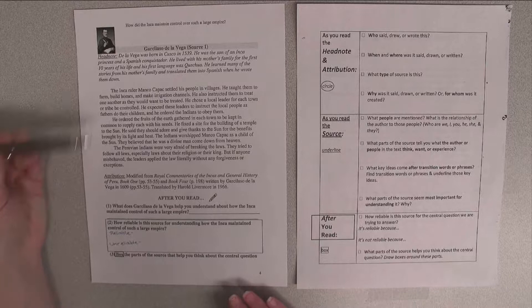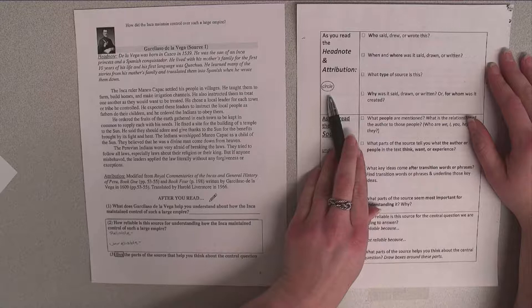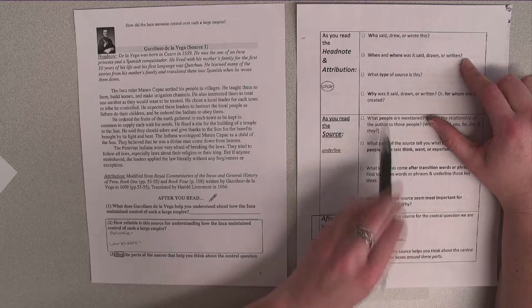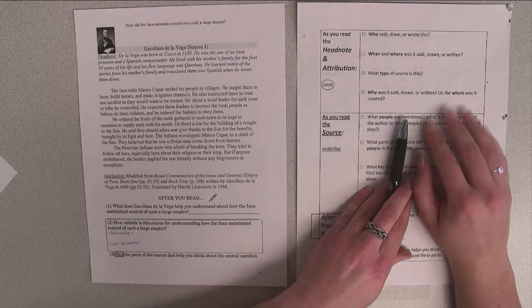So as we look at our source, the first thing we're going to do is look at our headnote and attribution and we're going to circle anything that tells us who said, drew, or wrote the source; when and where it was said, drawn, or written; what type of source it is; why was it said, drawn, or written; or for whom was it created.